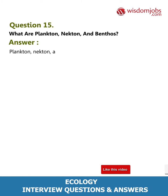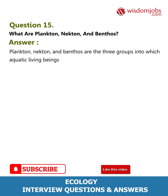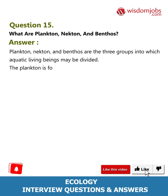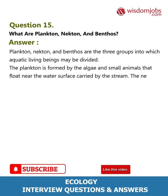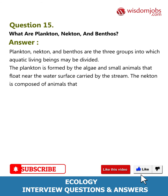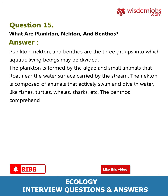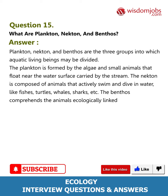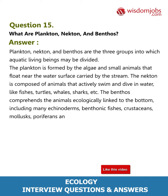Question 15: What are plankton, nekton, and benthos? Plankton, nekton, and benthos are the three groups into which aquatic living beings may be divided. Plankton is formed by algae and small animals that float near the water surface, carried by the current. Nekton is composed of animals that actively swim and dive in water, like fish, turtles, whales, and sharks. Benthos comprises animals ecologically linked to the bottom, including many echinoderms, benthic fish, crustaceans, molluscs, and annelids.